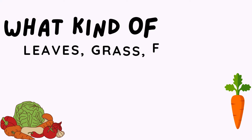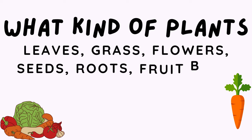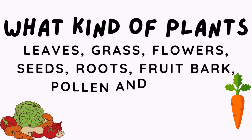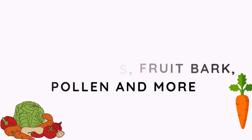What kinds of plants do they eat? They eat leaves, grass, flowers, seeds, roots, fruit bark, pollen and many, many more.